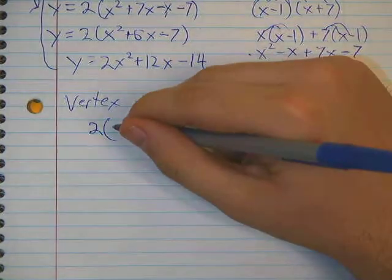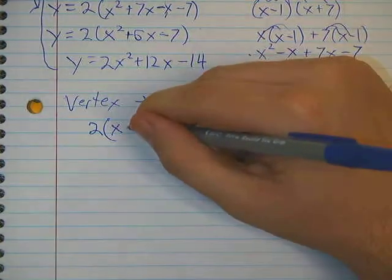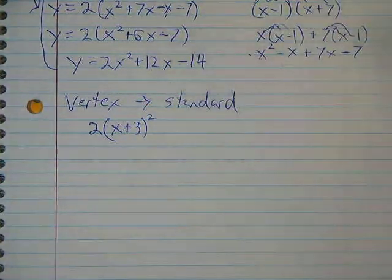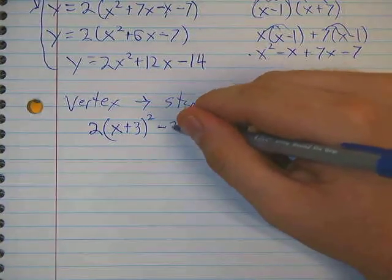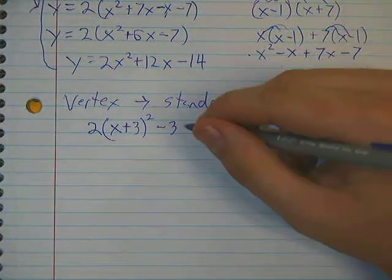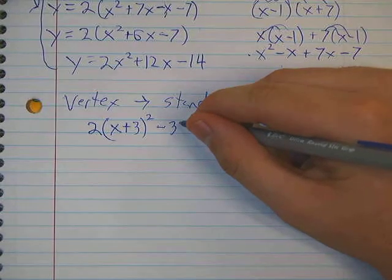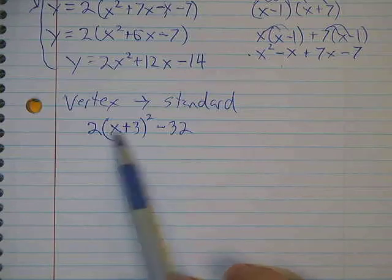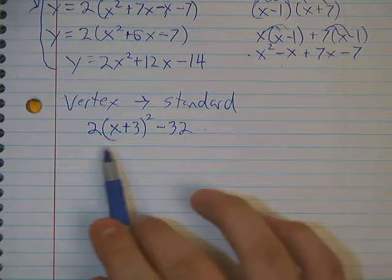So if our vertex form was, say, 2 times... Let's say x plus 3 squared minus 32. Why not?